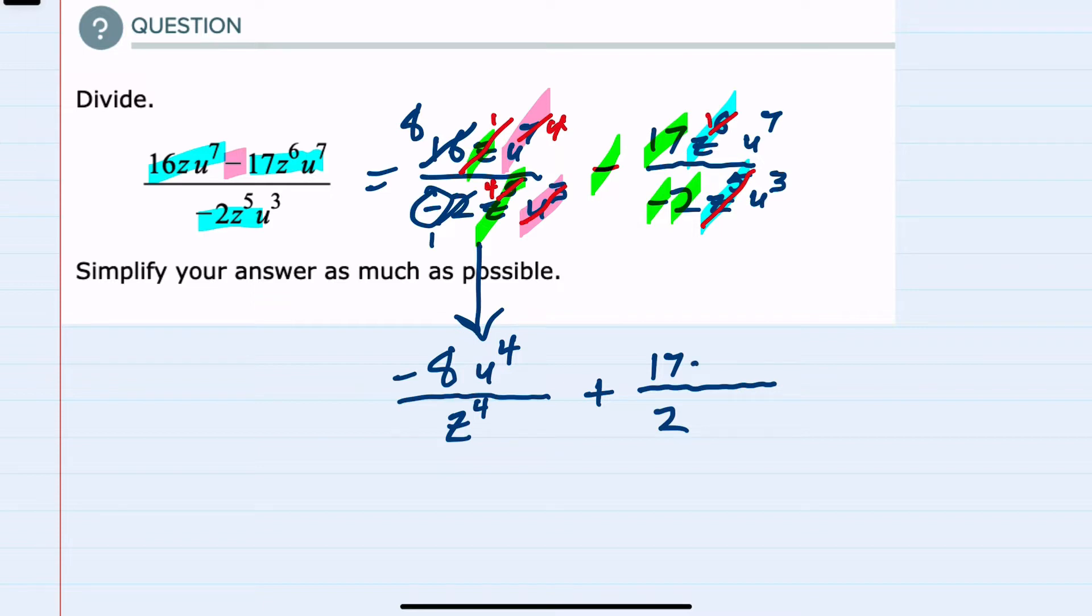And then for the U's, seven in the numerator, three in the denominator. These three will cancel three of these, leaving me with only four. So U4 in the numerator. We have simplified as much as possible.